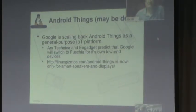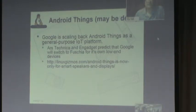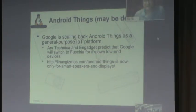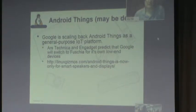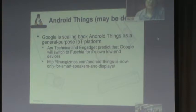Android Things is another Google operating system really targeted at IoT. It was included in a few of Google's own products including some smart speakers, but this appears to be dead now. If you're working on Android Things, it looks like Google is dropping it — it seems to be deprecated. Publications like Ars Technica and Engadget are predicting Google will abandon it and switch to Fuchsia for its own low-end devices.